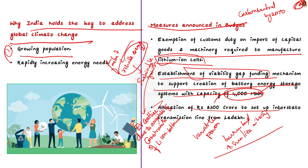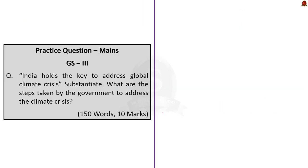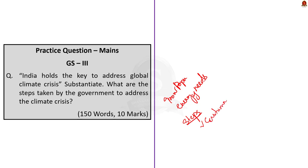These are some of the steps taken by the government that will help India go green and address the climate crisis. In summary: growing population and growing energy needs are the two reasons India holds the key to global climate targets. Steps taken include exempting customs duty on capital goods for lithium-ion cell manufacture, establishing a Viability Gap Funding mechanism for battery energy storage systems, and allocating funds for an interstate transmission line from Ladakh.